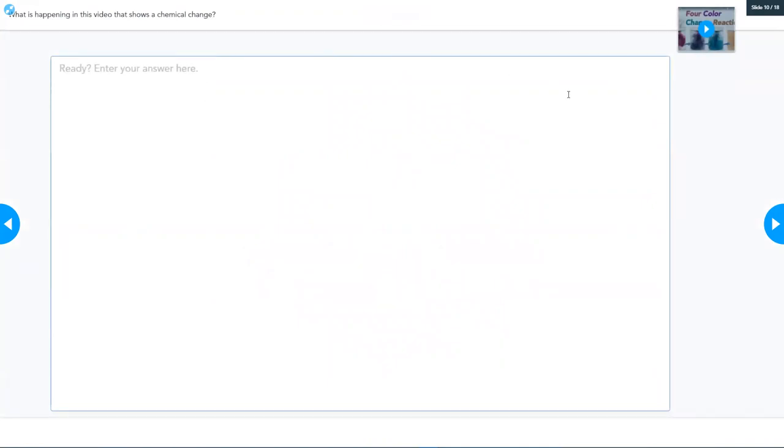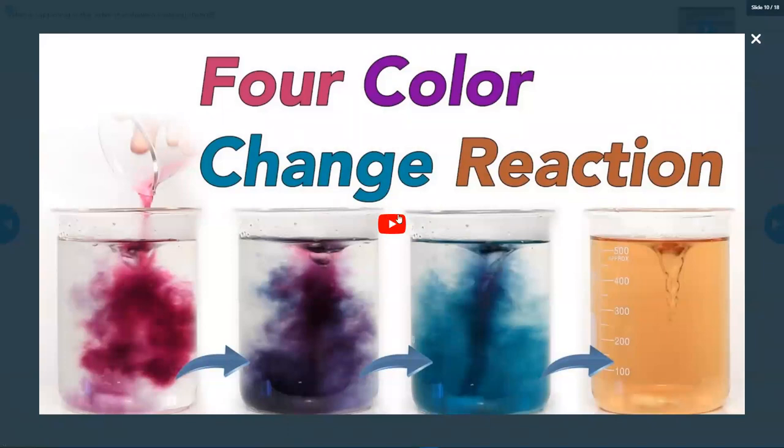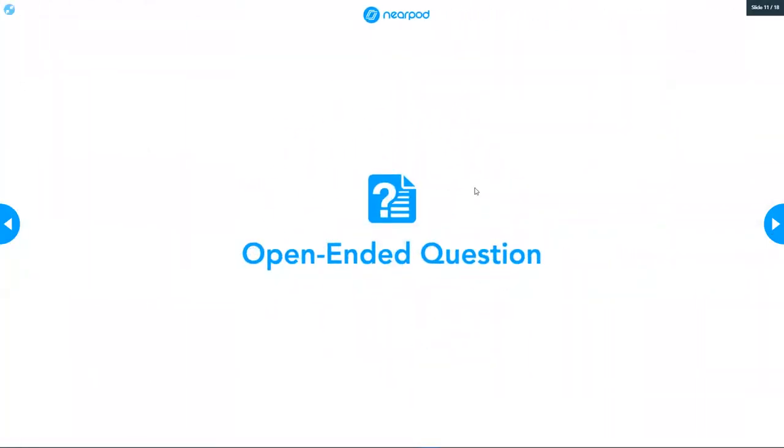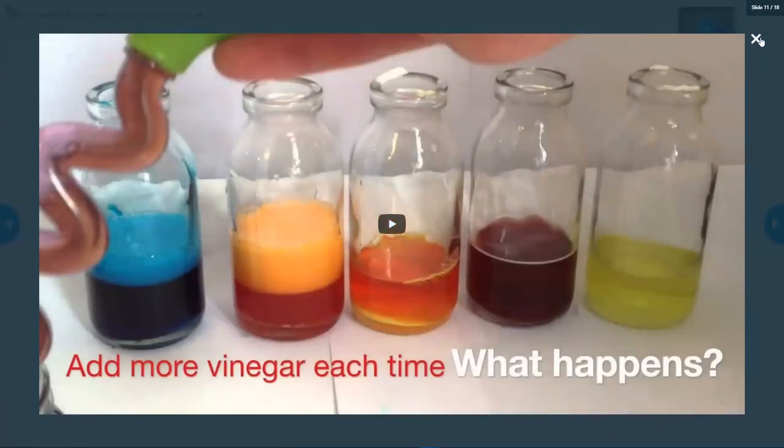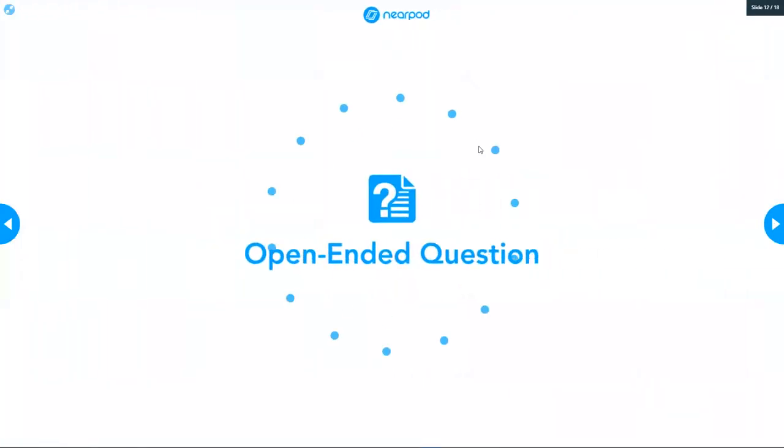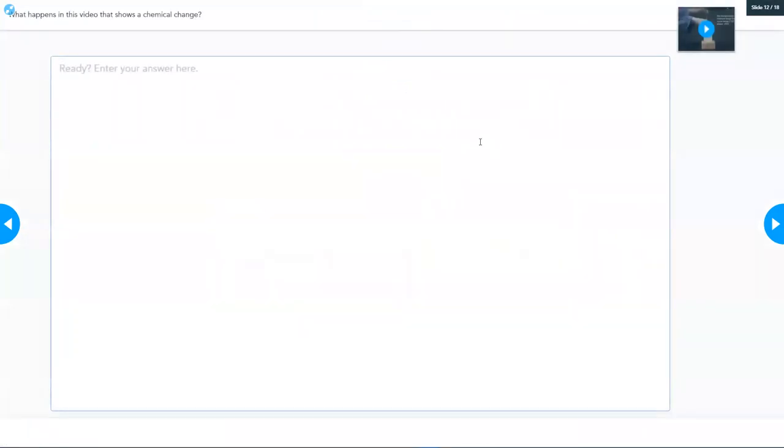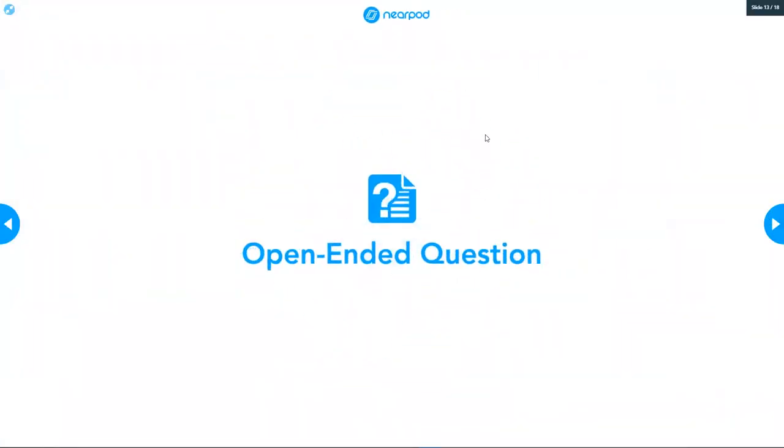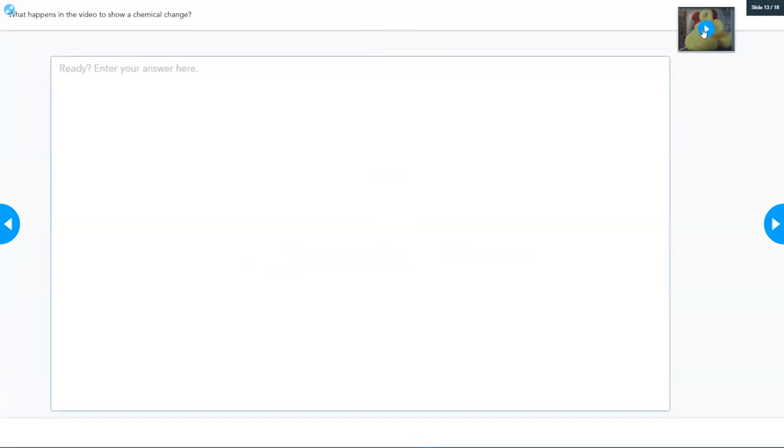What is happening in this video that shows a chemical change? You're going to click on this video and watch it. And you're going to tell me whether what you see is an indicator of a chemical change. You're going to watch the videos and tell me what the indicator is of a chemical change.